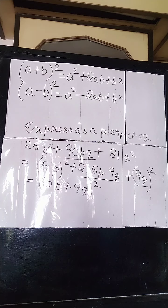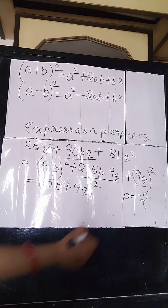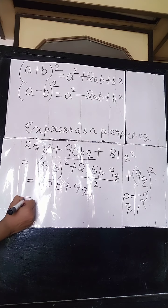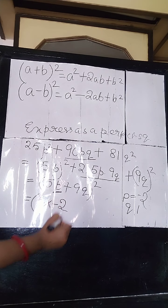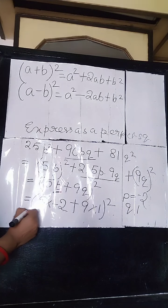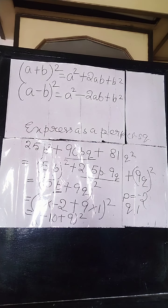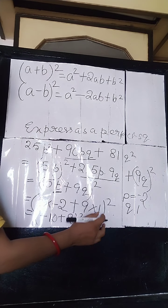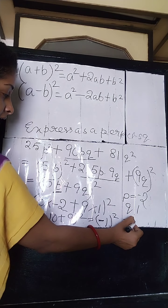Suppose you are given the value of p as minus 2 and q as 1. You write 5 into minus 2 plus 9 into 1, whole square. This becomes minus 10 plus 9 whole square. Minus 10 plus 9 is minus 1, so finally it is minus 1 whole square, and minus 1 whole square is 1. The answer is 1.